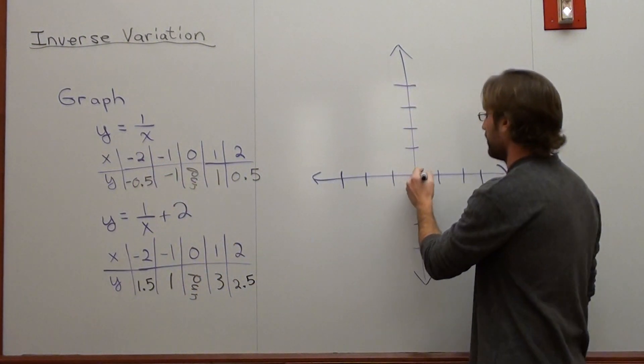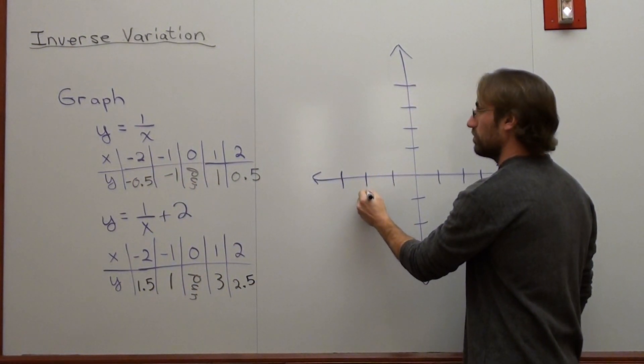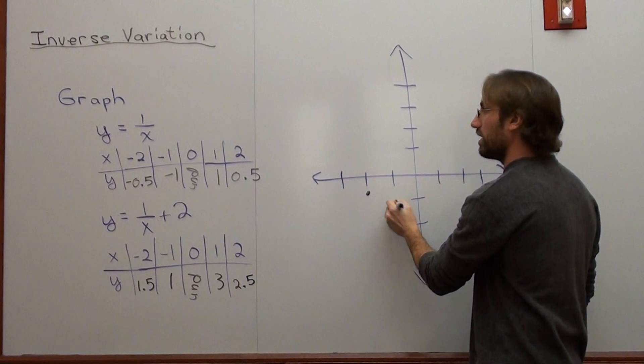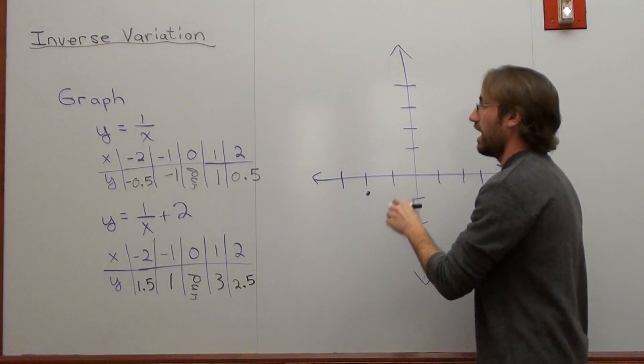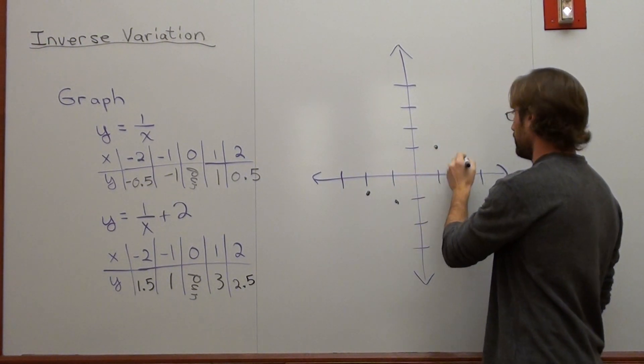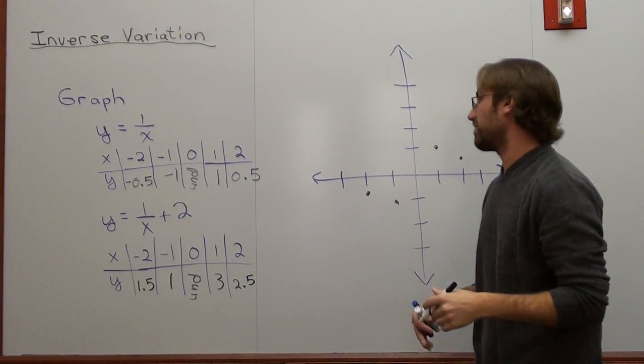So at negative 2, it's negative 0.5. At negative 1, it's 1. At 0, it's undefined. At 1, it's 1. And at 2, it's 0.5. Now it's the same type of graph. You might not believe me.